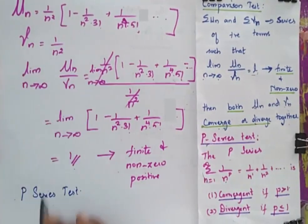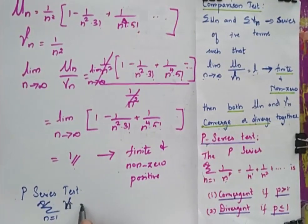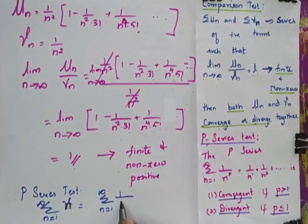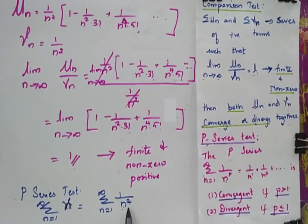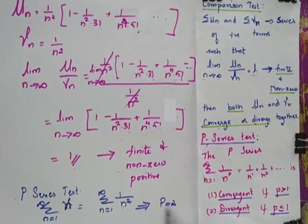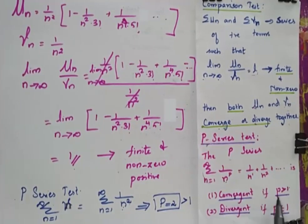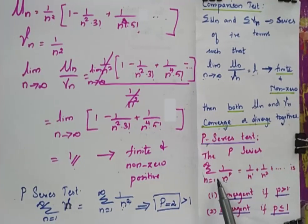Since v_n = 1/n², the summation from n=1 to ∞ of v_n = Σ 1/n². Comparing this with the p-series 1/nᵖ, we find p = 2, where p > 1. Since p > 1, v_n is convergent.